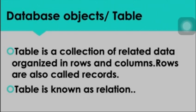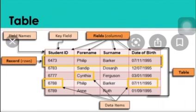Looking at the figure of a table: this is a table. A row is called a record. There are fields such as student ID, first name, second name.